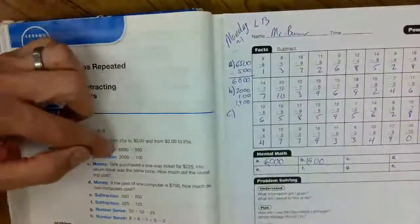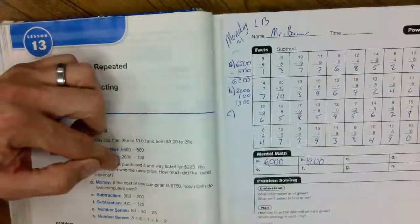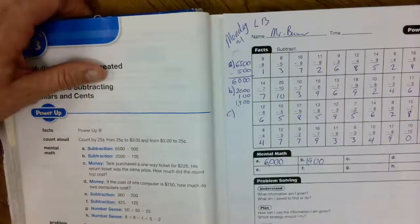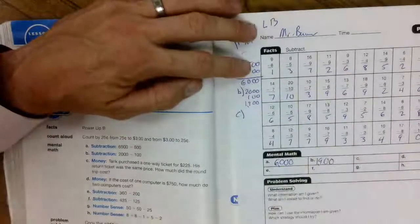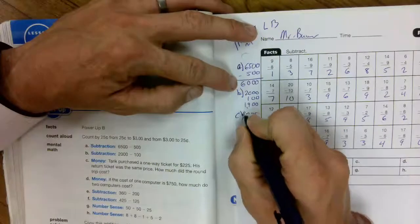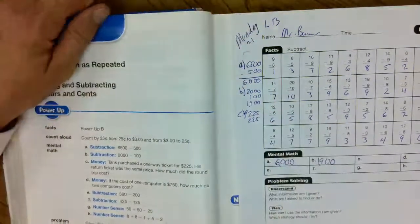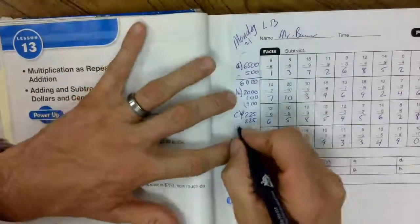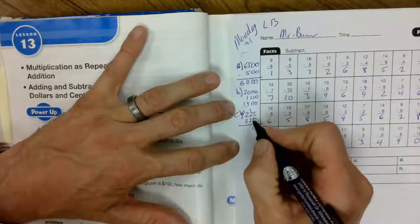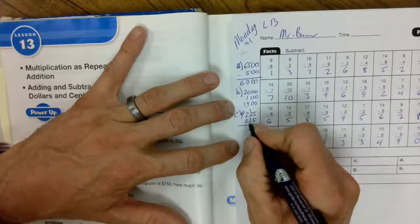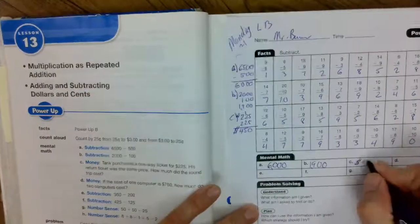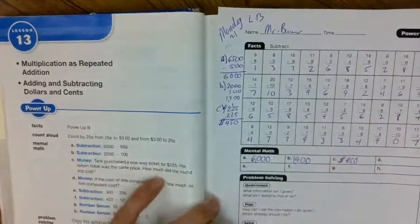C. Tarek purchased a one-way ticket for $225. His return ticket was the same price. How much did the round trip cost? To get there, cost him $225. To get home, cost him the same. $225. $225 plus $225. 5 plus 5 is 10. 0 down, 1 up. Keep them all nice and straight. 2 plus 2 is 4. Plus 1 is 5. And 2 plus 2 is 4. 450. Do I need a label? Yes. Dollars. $450.